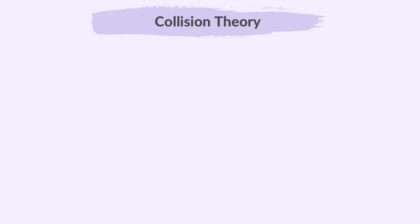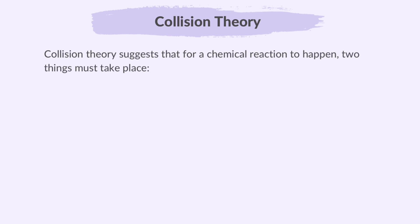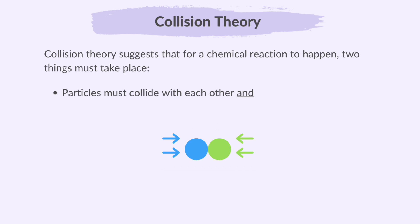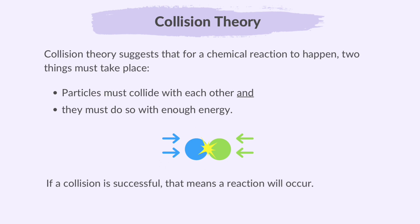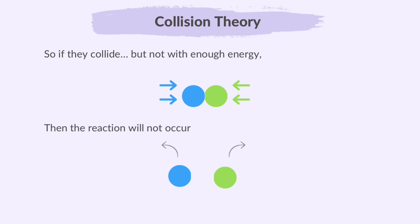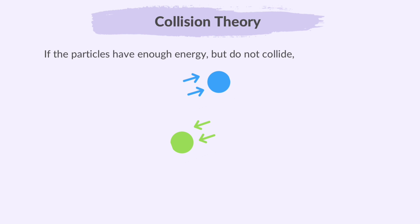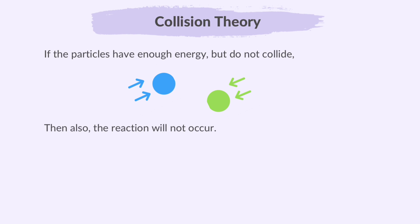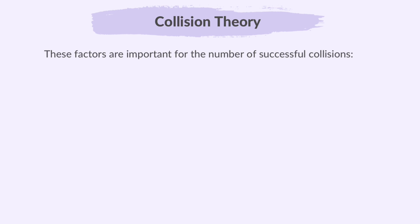Let's learn about collision theory. Collision theory suggests that for a chemical reaction to happen, two things must take place: particles must collide with each other, and they must do so with enough energy. These collisions are essential for breaking bonds and forming new substances. If a collision is successful, a reaction will occur. If they collide but not with enough energy, the reaction will not occur — these are called unsuccessful collisions. If the particles have enough energy but do not collide, then also the reaction will not occur.